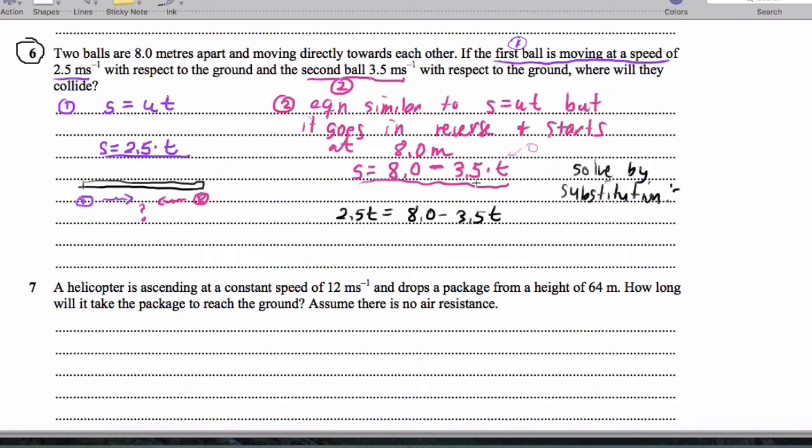And I'll do a little bit of algebra here. I'm going to add 3.5t to both sides. I'm going to be faster with my algebra this year, so this ends up being 6.0t is 8.0, and t ends up being 1.3 seconds.